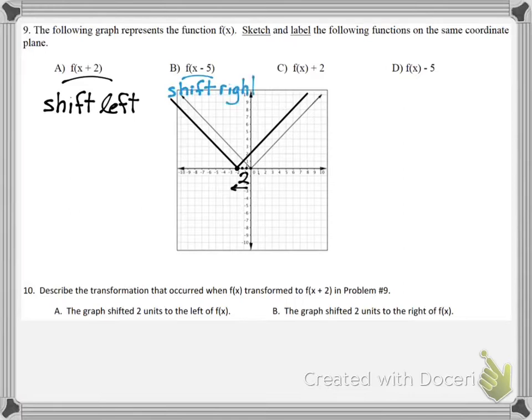Part B: F of x minus 5. Again, the minus 5 is inside of the parentheses. You would shift that to the right 5 units. And there you go.